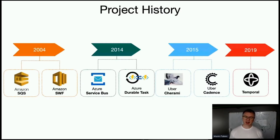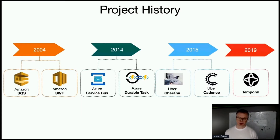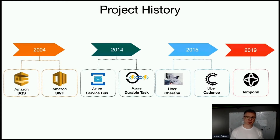By coincidence we both joined Uber in 2015. We worked on a messaging system called Cherami, but out of that grew the Cadence project — an orchestrator based on the ideas of Amazon Simple Workflow Service. It became popular inside and outside Uber; within three years, over 100 projects within Uber were using it. In 2019 we quit Uber and started the company called Temporal. Temporal is a fork of Cadence, a continuation of those ideas, still open source, still MIT licensed.